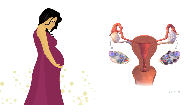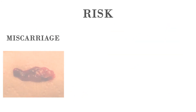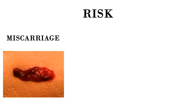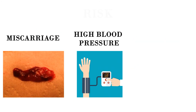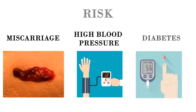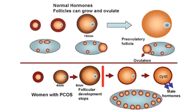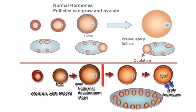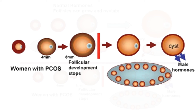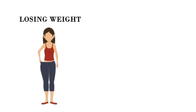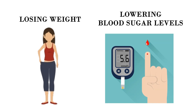Women with PCOS are twice as likely as women without the condition to deliver their baby prematurely. They are also at greater risk for miscarriage, high blood pressure, and gestational diabetes. However, women with PCOS can get pregnant using fertility treatments that improve ovulation. Losing weight and lowering blood sugar levels can also improve your odds of having a healthy pregnancy.